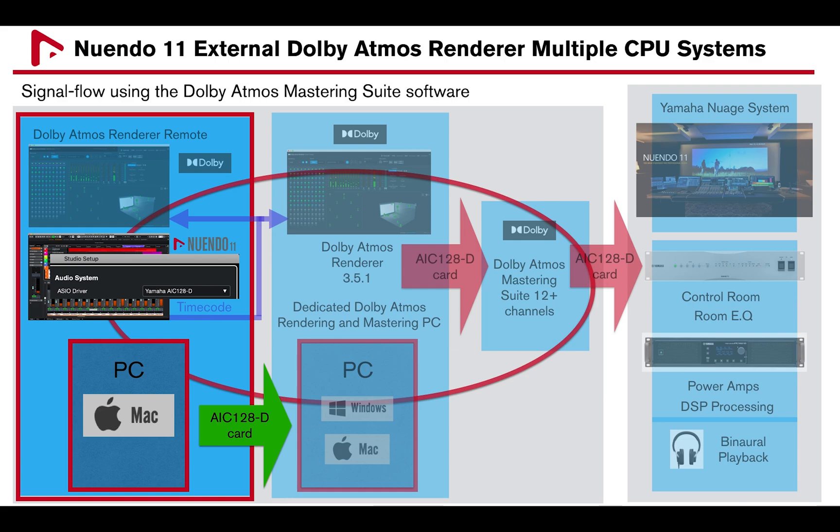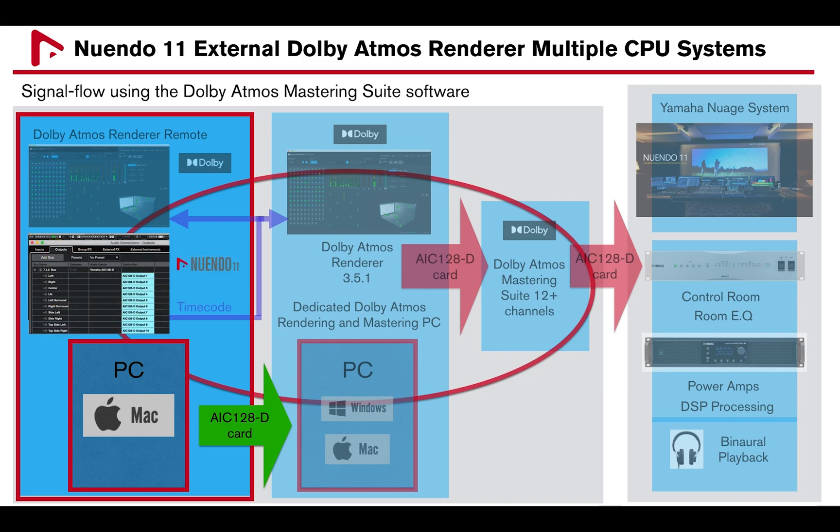In new Windows 11, under Studio, Studio Setup, Audio System, the Yamaha AIC 128D card should be selected. Under Audio Connection, Output Tab, create a 7.1.2 output bus patched to the AIC 128D card outputs 1 through 10.